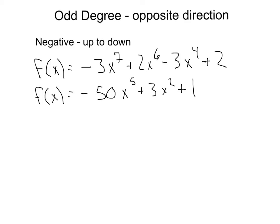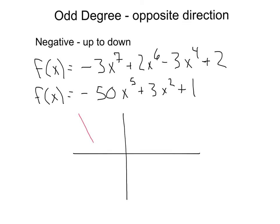In the case where we have a negative leading term with an odd degree, we go from up to down. So on the left end behavior we're going from positive infinity, and the right end behavior goes to negative infinity. Here we see we have negative 3 as our leading term with an odd degree of 7. Here we have negative 50 as our leading term with an odd degree of 5. So our left end behavior is going to be going from the up direction, from positive infinity, and our right end behavior is going to be going down towards negative infinity.